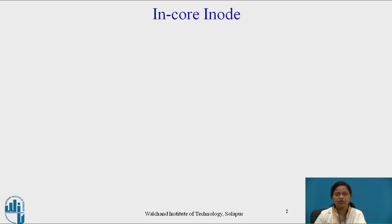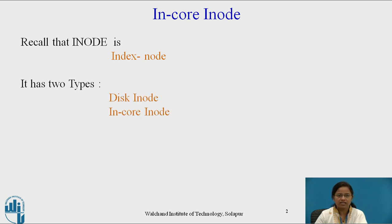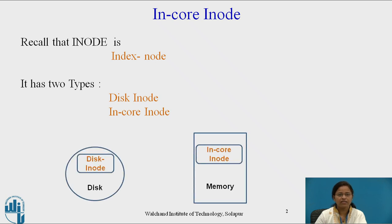Let us see in-core i-node. Recall that i-node is nothing but index node. As we already know, in the Unix operating system everything is created as a file, so each file has its unique i-node. The i-node has two types: disk i-node and in-core i-node. Disk i-node is present on disk, while in-core i-node is present in memory.